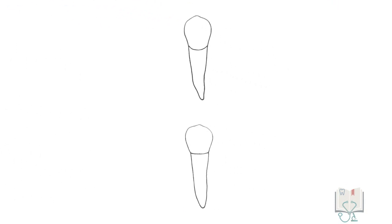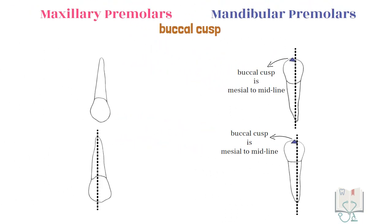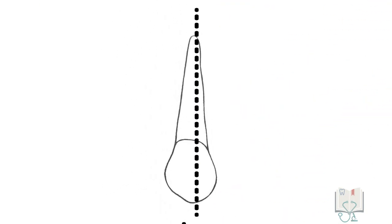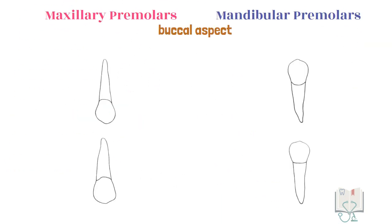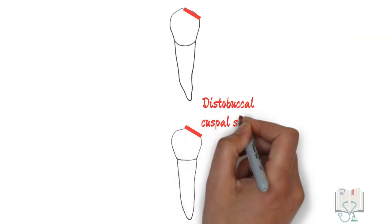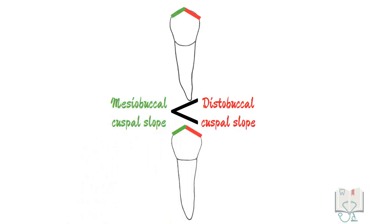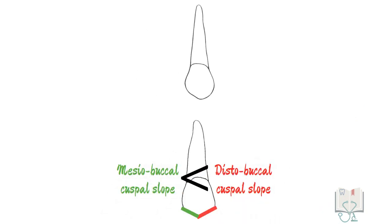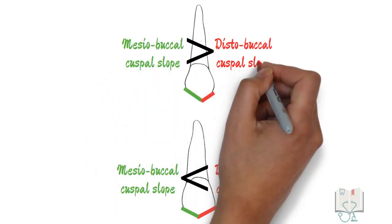In both mandibular premolars, relative to the midline axis of the tooth, the buccal cusp tip lies to the mesial side. However, only in the maxillary second premolar is the buccal cusp tip mesial, as in the first premolar it is distal to the midline axis. Similarly, in both mandibular premolars, the disto-buccal cusp slope is longer than the mesio-buccal cusp slope. However, in the maxilla, only in the second premolar is the disto-buccal cusp slope longer; in the first premolar, the mesio-buccal cusp slope is longer than the disto-buccal cusp slope.